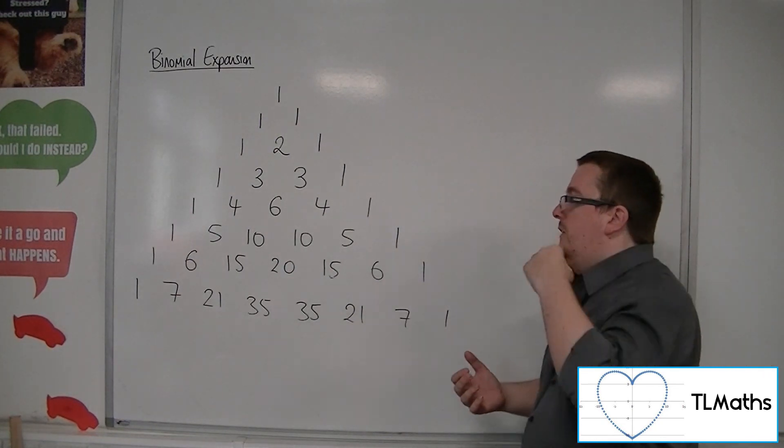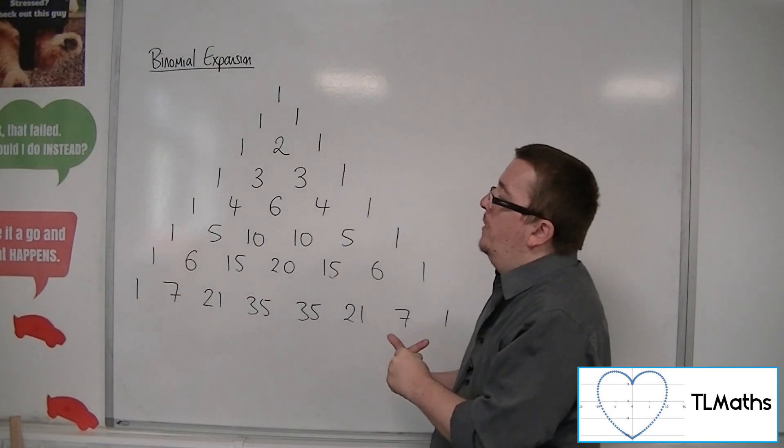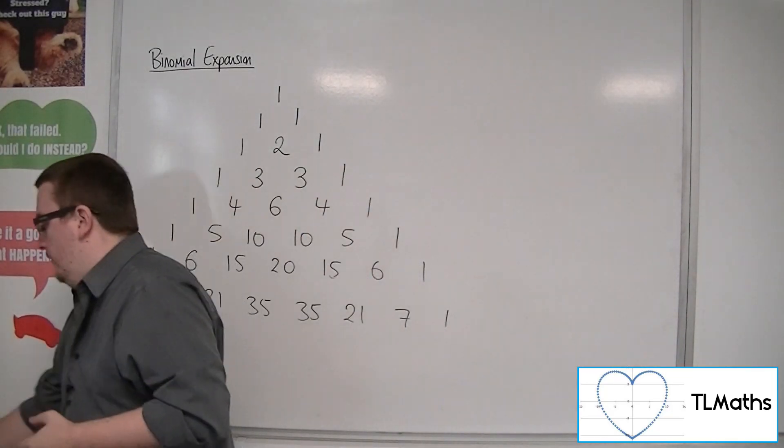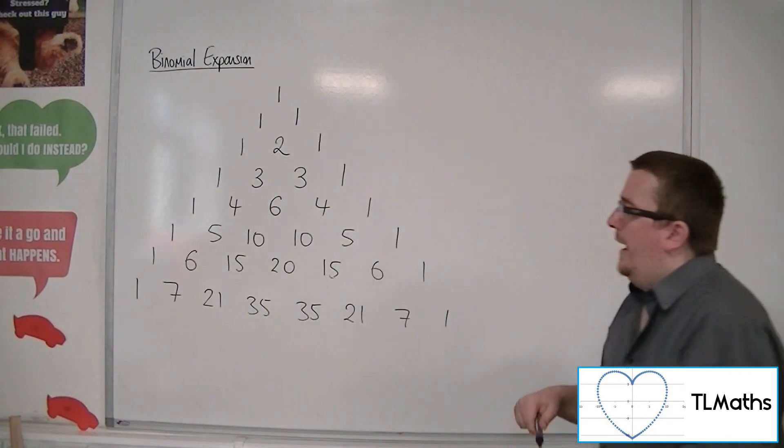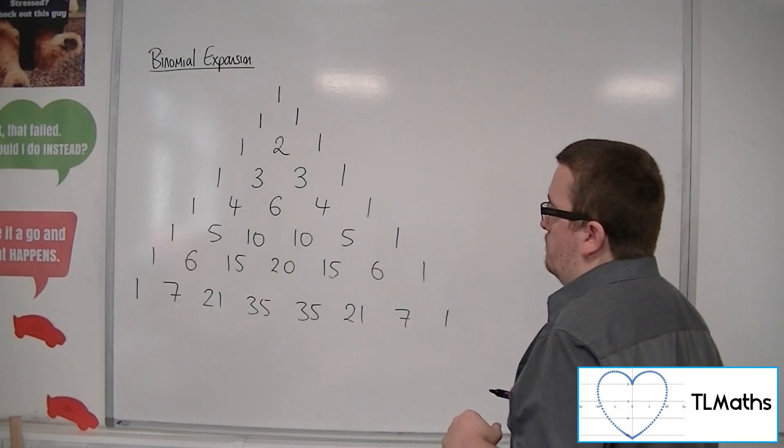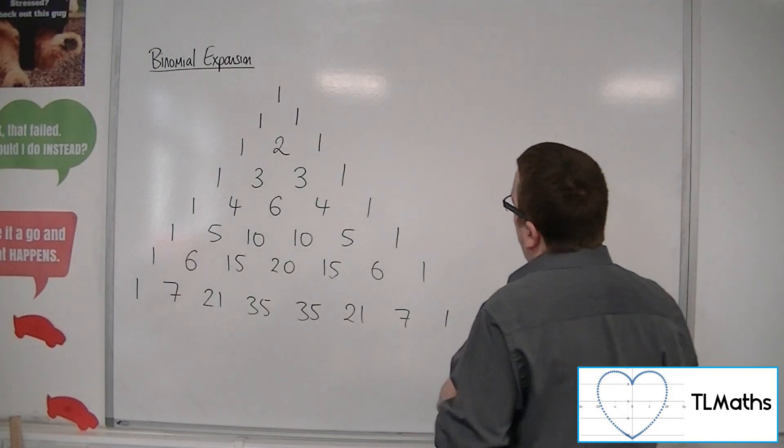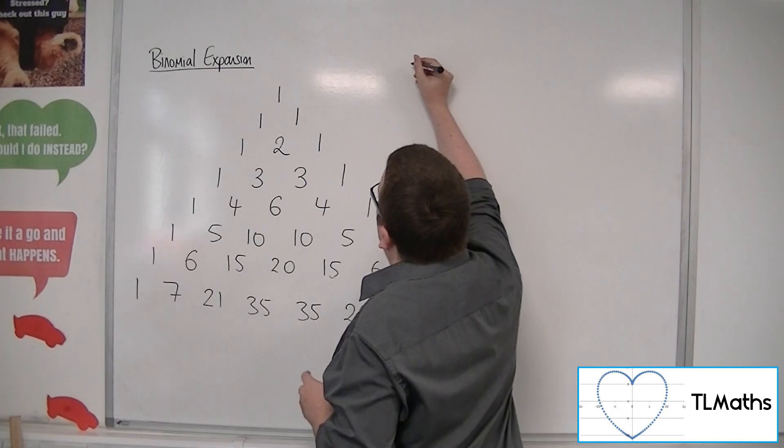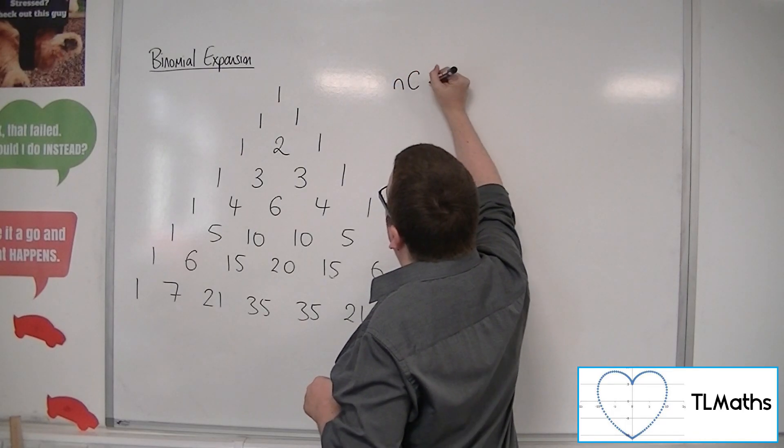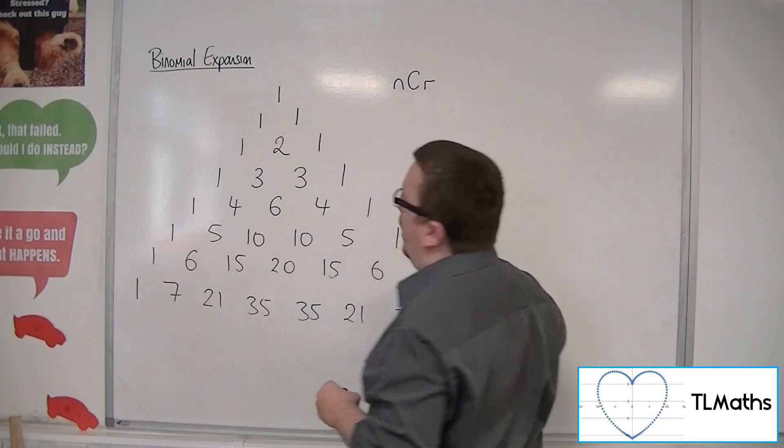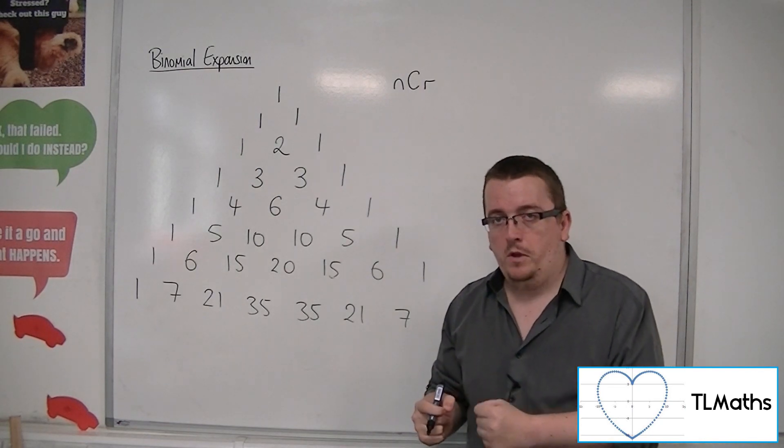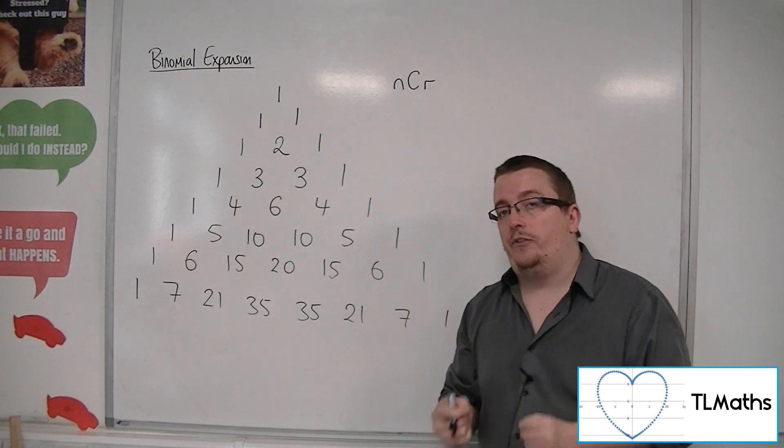We have a formula that takes care of it. If we have N items and we are choosing R of them, what is the number of ways of arranging them? We reference this as NCR.